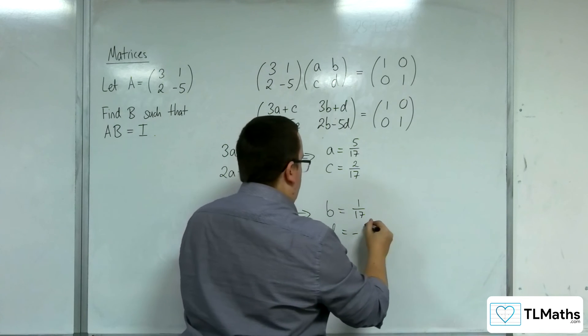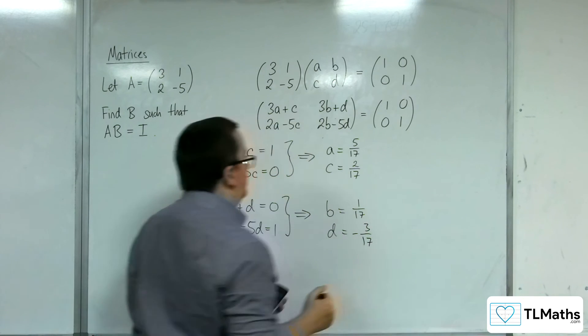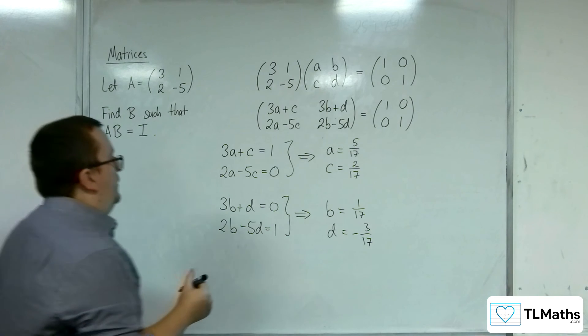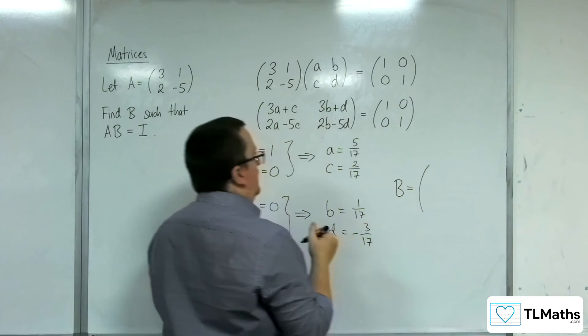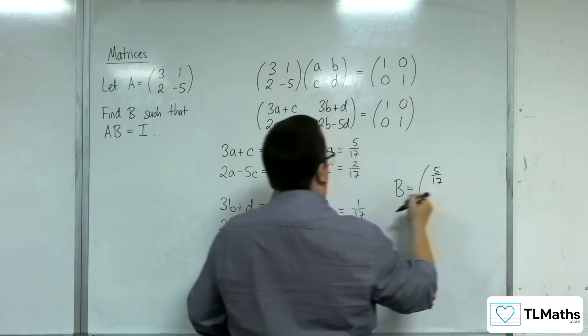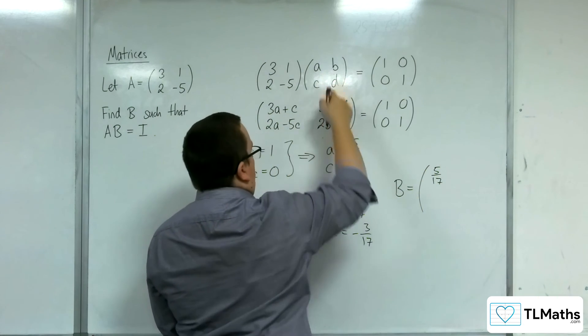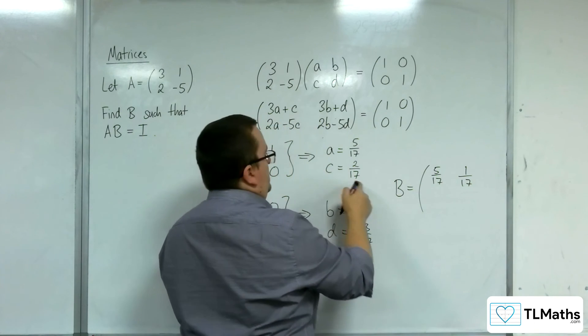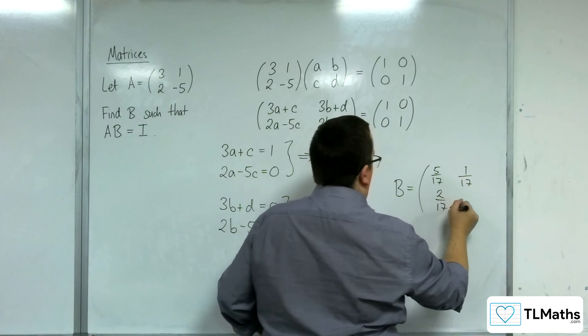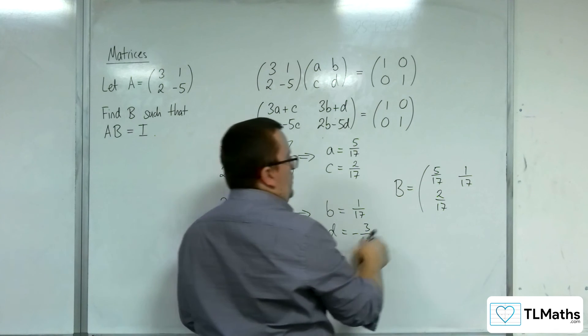So that means that the matrix B must be 5 17ths - this is A - B would be the 1 17th, C is the 2 17ths, and the D is the minus 3 17ths.